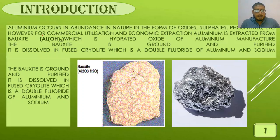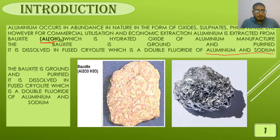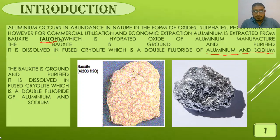As you can see, aluminum exists in bauxite, in aluminum hydroxide form. It is also found as fused cryolite, which is a double fluoride of aluminum and sodium. At first, aluminum is extracted from the bauxite ore, which is a hydrated oxide of aluminum. It is further ground and purified, then dissolved in the fused cryolite, which is a double fluoride of aluminum and sodium.